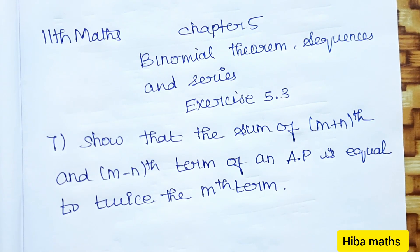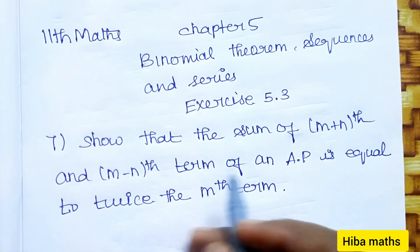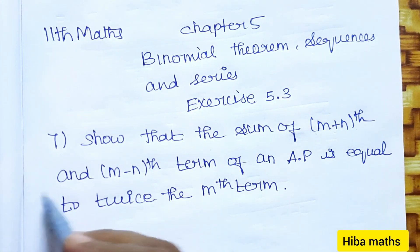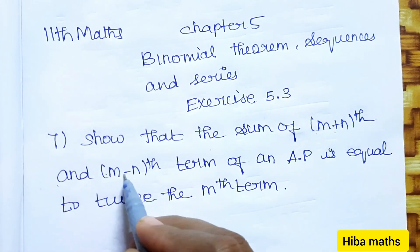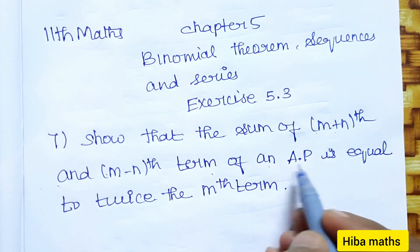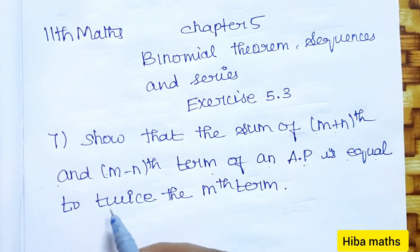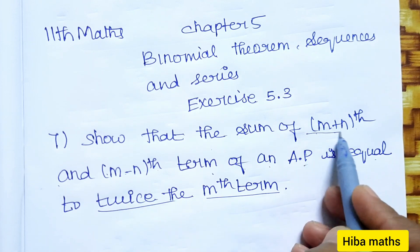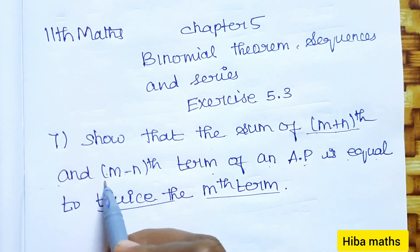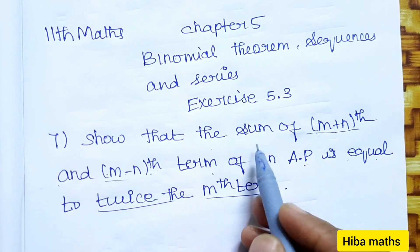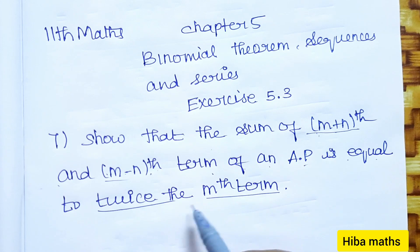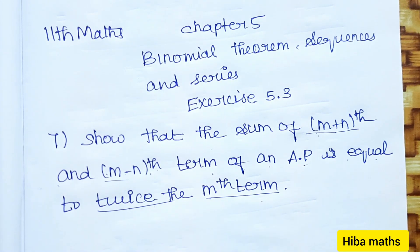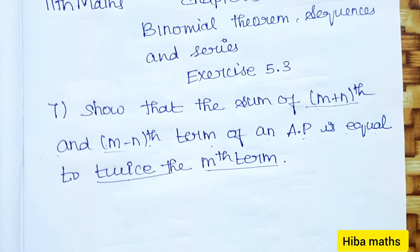We will solve this in the video. Show that the sum of the (m+n)th and (m-n)th term of an AP is equal to twice the mth term. So first, we know t(m+n) plus t(m-n) equals 2 times the mth term — we will prove it.